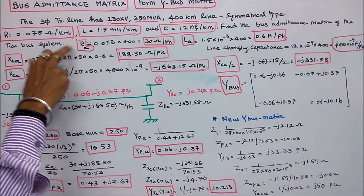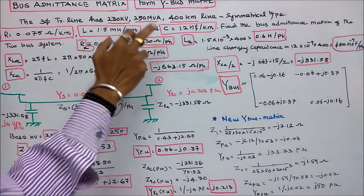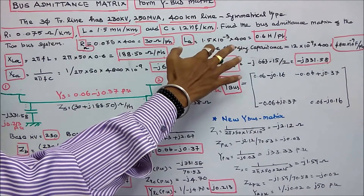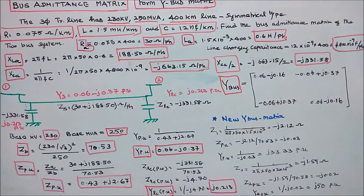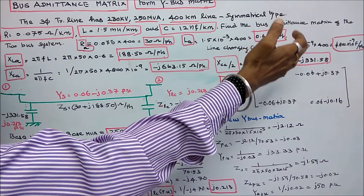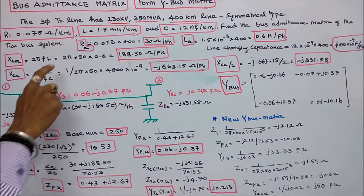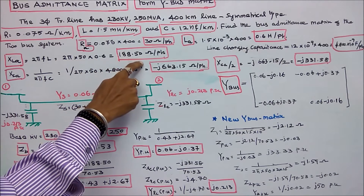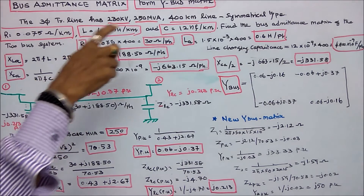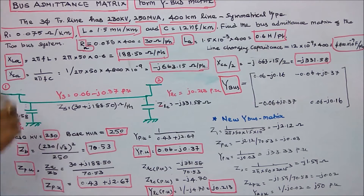Actual resistance is equal to 0.075 × 400 = 30 ohms per phase. Actual inductance is equal to 1.5 × 10⁻³ × 400 = 0.6 H per phase. Line charging capacitance is equal to 12 × 10⁻⁹ × 400 = 4800 × 10⁻⁹ farads per phase. Inductive reactance = 2π × 50 × 0.6 = 188.50 ohms per phase. Therefore series impedance Z = 30 + j188.50 ohms per phase.